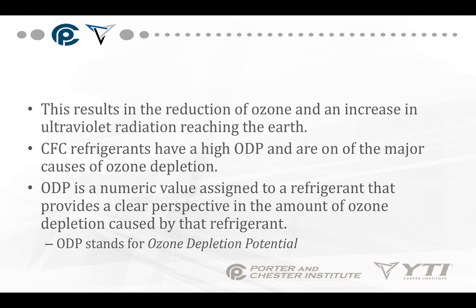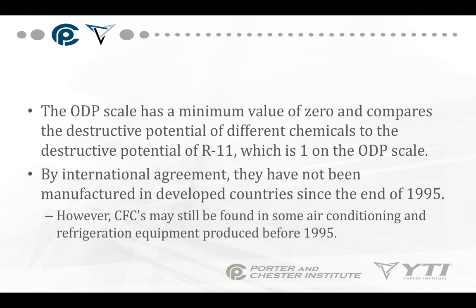The resulting reduction of ozone is an increase in ultraviolet radiation reaching the earth. CFC refrigerants have a high ozone depletion potential, ODP — another term you need to know. ODP is a numeric value assigned to the refrigerant that provides a clear perspective on the amount of ozone depletion caused by that refrigerant. The ODP scale has a minimum value of zero. R11 is rated 1 on the ODP scale. By international agreement, CFCs have not been manufactured in developed countries since about the end of 1995. CFCs can still be found in air conditioning and refrigeration equipment produced before 1995, so be very careful when looking at nameplates. Find the year manufactured — if it's before 1995, you may have a CFC. Do not mix it.